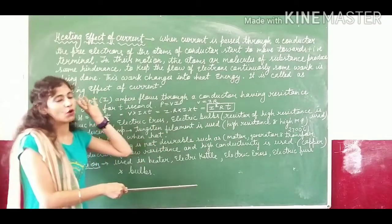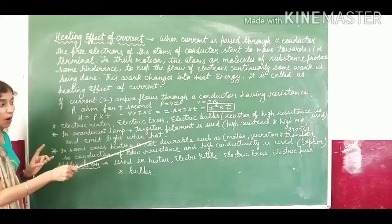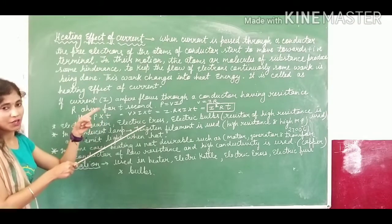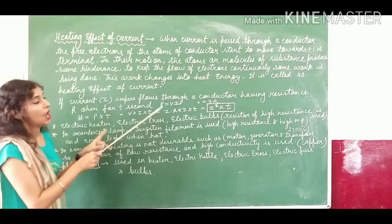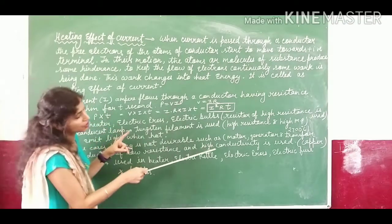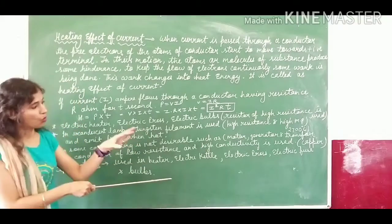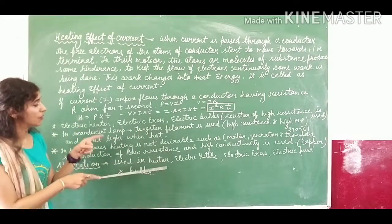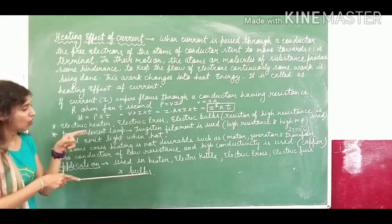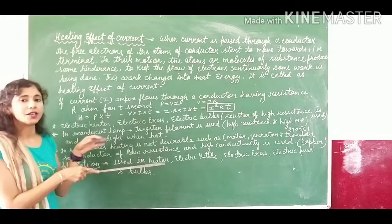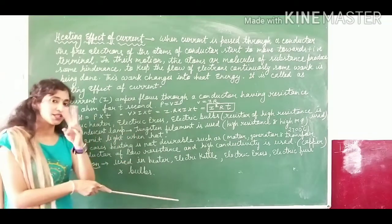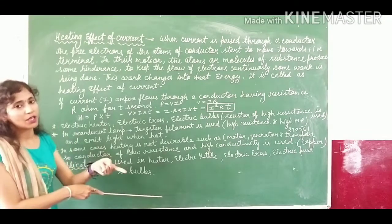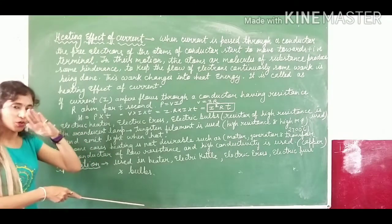The best example for low-resistance, high-conductivity material is copper. Copper is not used in the filament of a bulb — tungsten is used for that. Tungsten is not used in a motor or generator — copper is used there, because copper has no resistance and high conductivity. There is an inverse relation between current and resistance — where resistance is low, current will be high.